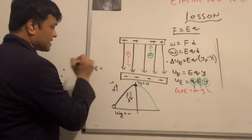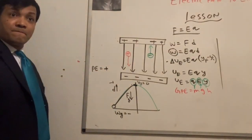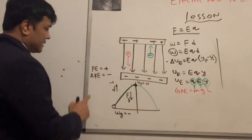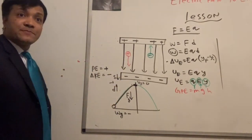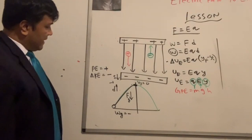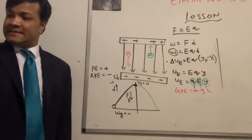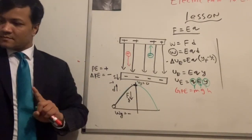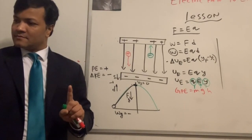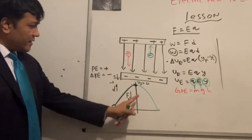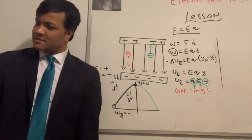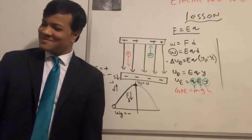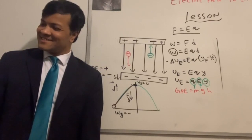So on the way up, the potential energy is positive — it's increasing. What about kinetic energy? Kinetic energy is decreasing because the speed is decreasing, so it is negative. The work done is also negative, consistent with the work-kinetic energy theorem.